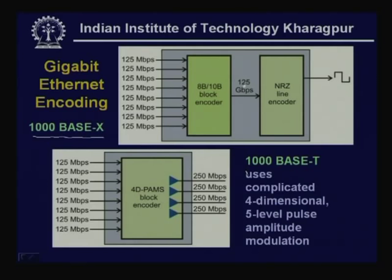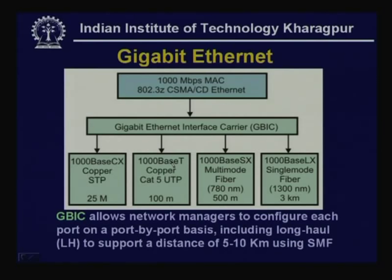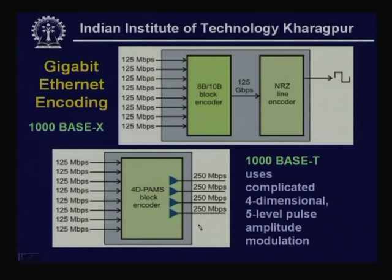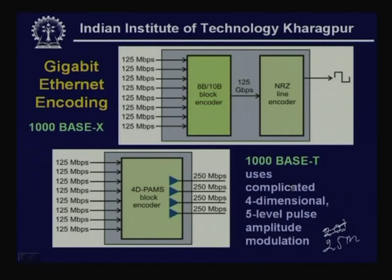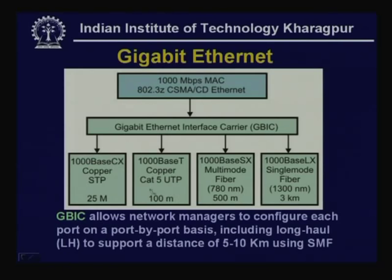The 4D-PAM5 encoding supports up to 25 meters on category 5 UTP. For short distances, shielded twisted pair (1000BASE-CX) can also cover 25 meters. Optical fiber options include multimode fiber up to 100 or 500 meters, single mode fiber up to 3 km, or up to 5 to 10 km using the long-haul medium.